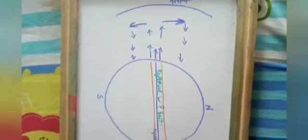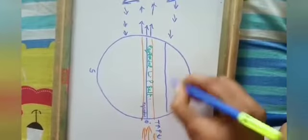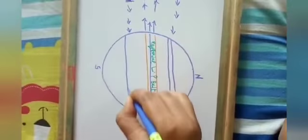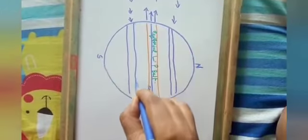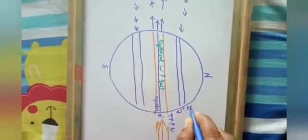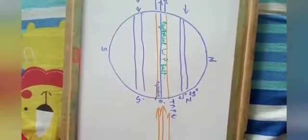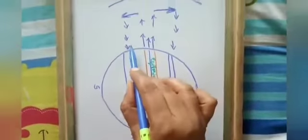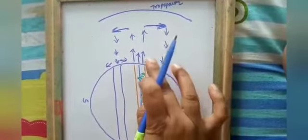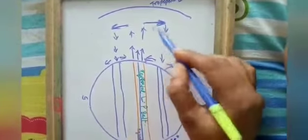The air sinks in both the northern and southern hemispheres, approximately at 25 to 35 degrees north and south. Here the sinking air is at 25 to 35 degrees north and also south. This sinking air then moves in both directions.